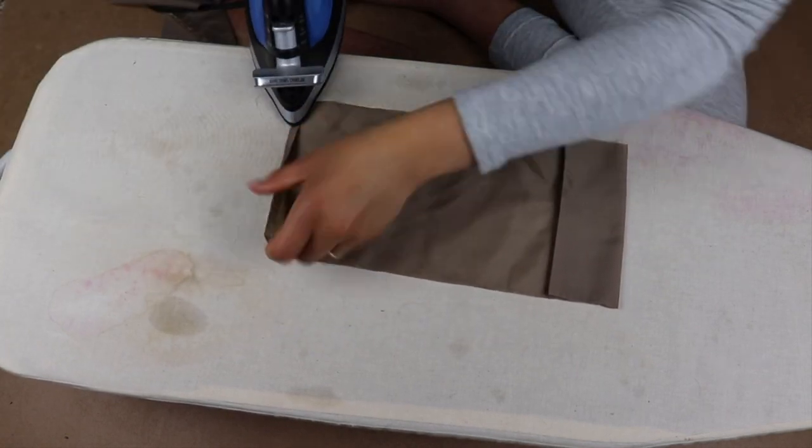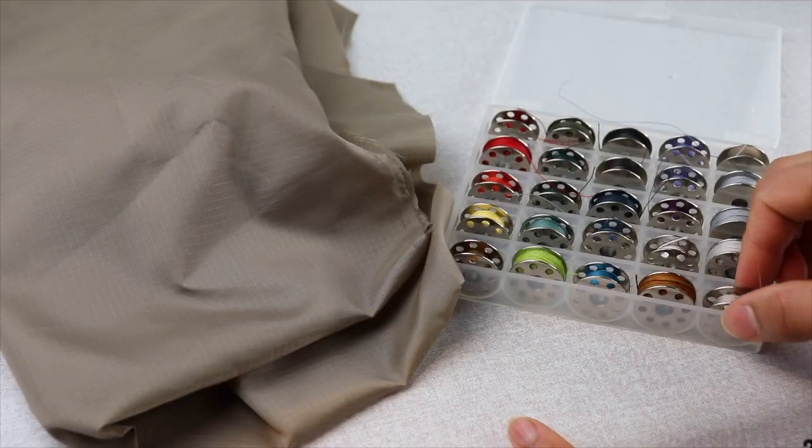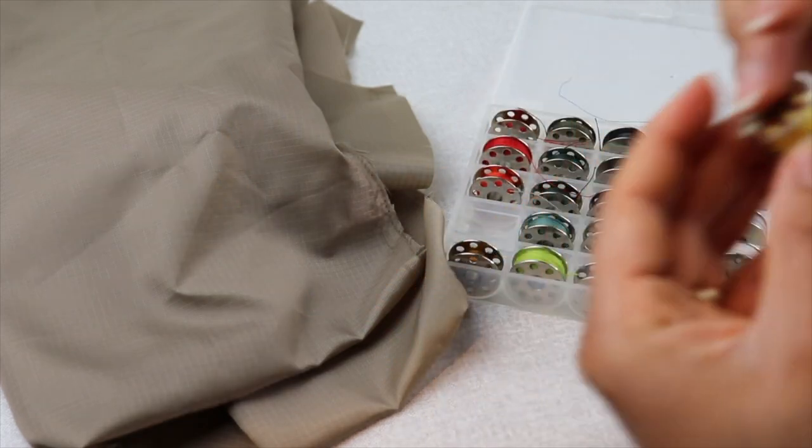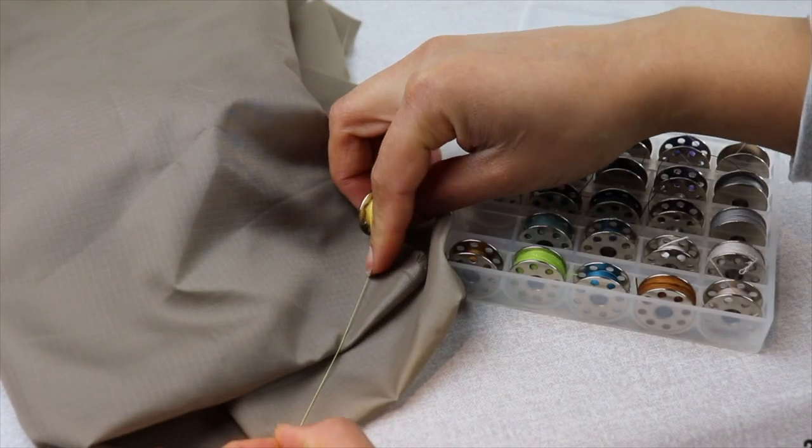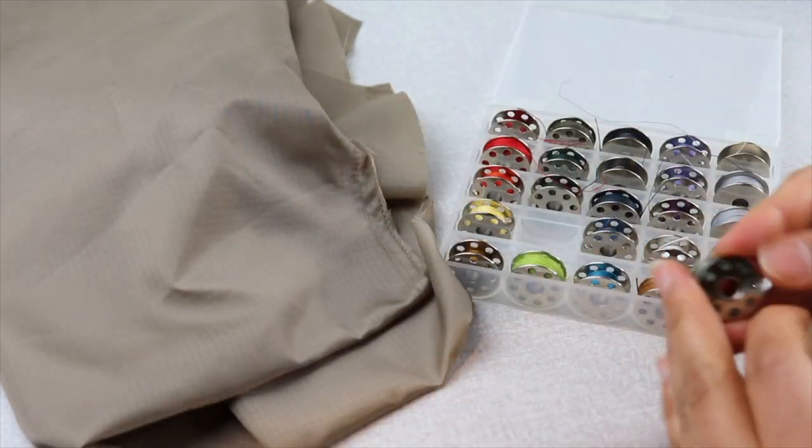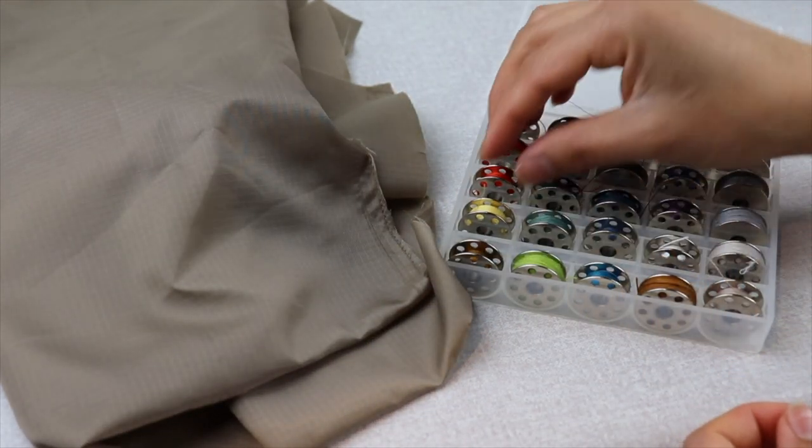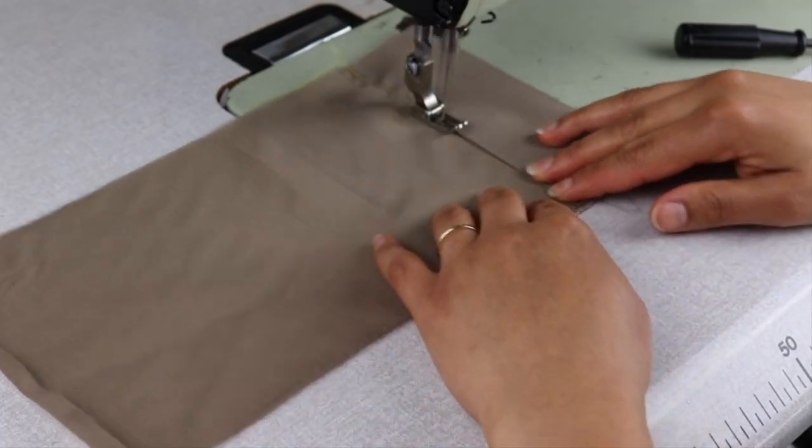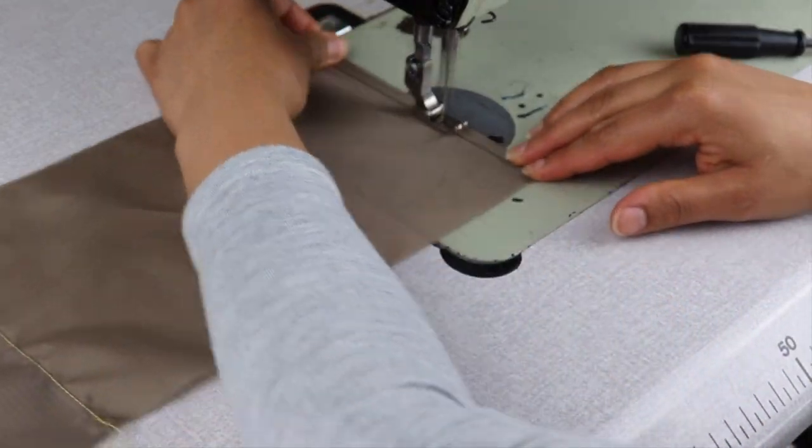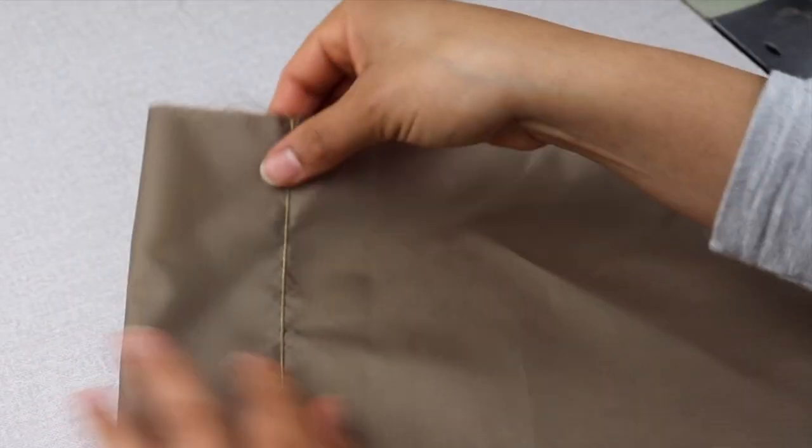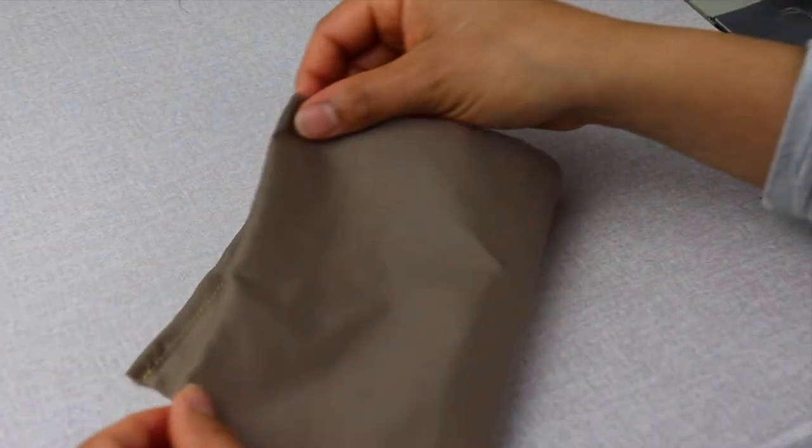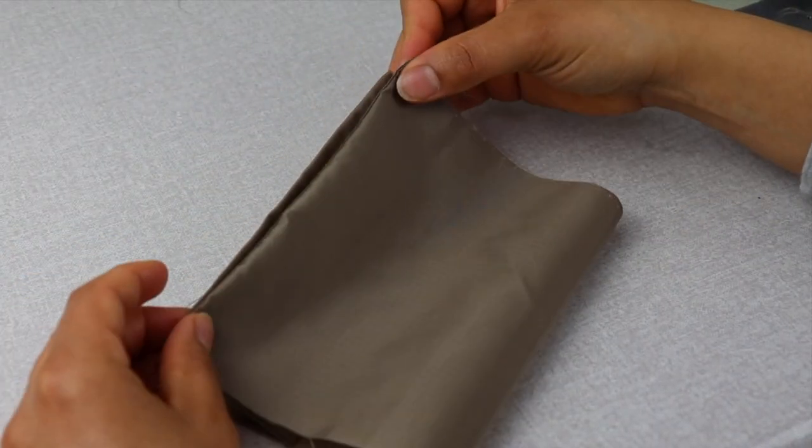I didn't have a close match for thread, so I decided to go with a nice contrasting yellow. Fold the two inch seam back and line up with the opposite side so half inch seams on each side.